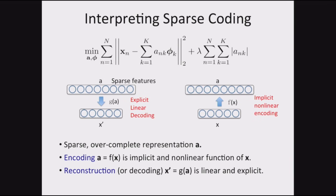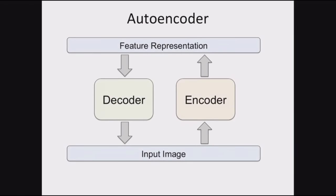What's the interpretation of sparse coding? We can think of it as finding an over-complete representation of your data. The encoding function — given an input, find the sparse coefficients — can be thought of as an implicit, very nonlinear function of x. But it's implicit; we don't specify it. The decoder or reconstruction is a simple, explicit linear function: take your coefficients, multiply by the right bases, and get back the image or data.